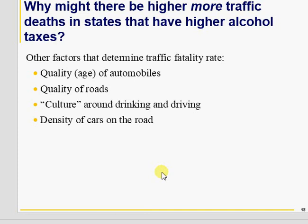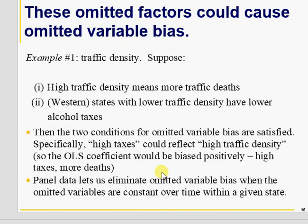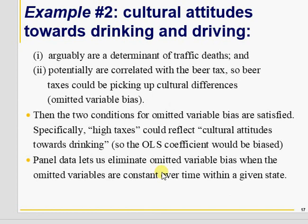Consider the culture around drinking and driving — how can you compare or measure the culture of Mumbai, Karachi, Dhaka, New York, or London? It is very difficult. Other omitted variables include the density of cars on roads, quality of roads, and quality of automobiles. These are potential variables that should be in the model. Where there is a bad drinking-and-driving culture, such as in parts of South Asia, you will have more traffic deaths.